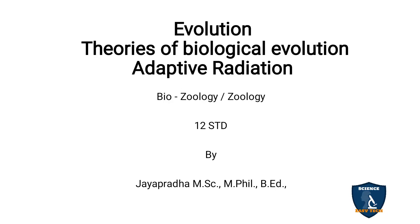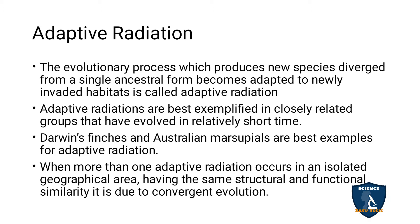Today, we are going to discuss adaptive radiation in theories of biological evolution. Adaptive radiation is the evolutionary process which produces new species diverged from a single ancestral form that becomes adapted to newly invaded habitats. A new species is formed from a single ancestor with divergent characteristics, adapted to newly invaded habitats — this is called adaptive radiation.